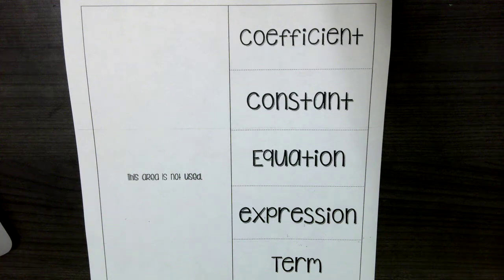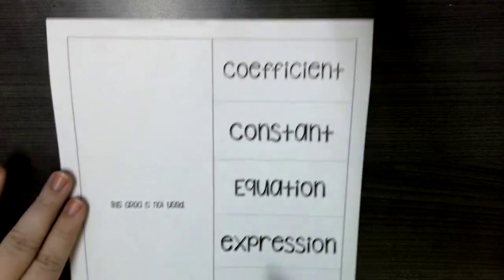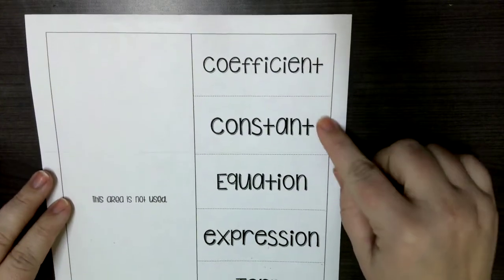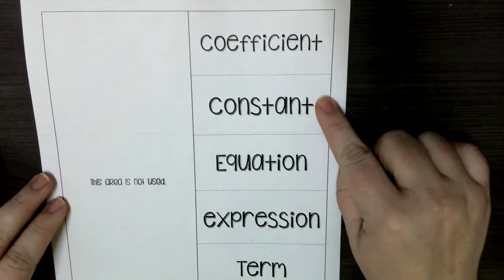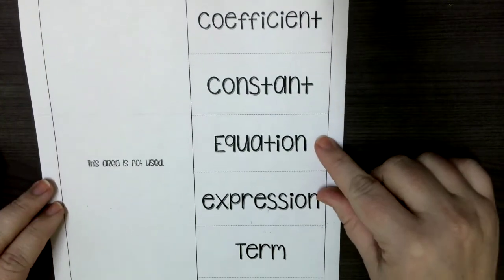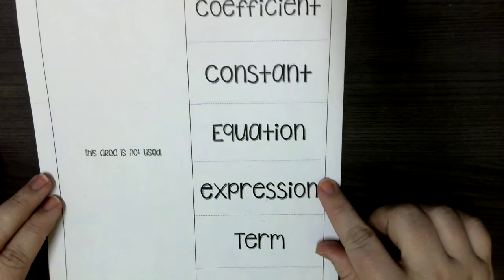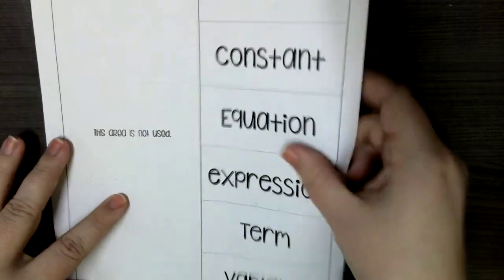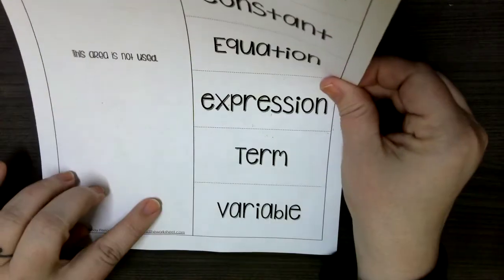Hi! We're going to work on this graphic organizer where we define what a coefficient is, a constant, equation, expression, term, and variable.